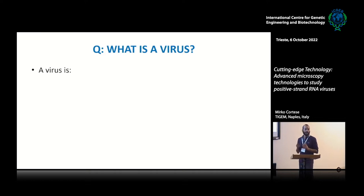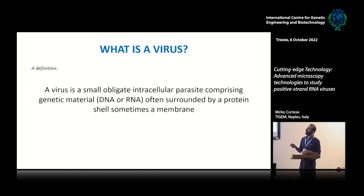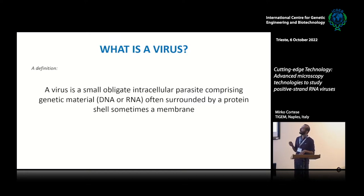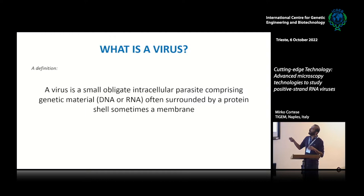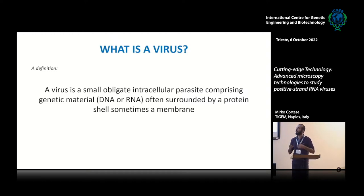Starting from the basics — what is a virus? This definition I took from Vincent Racaniello: a virus is a small obligate intracellular parasite that comprises some genetic material, DNA or RNA, often surrounded by protein shells, sometimes a membrane. First of all, it's an obligate intracellular parasite — it needs a cell to function, needs a cell to reproduce and create more viruses.